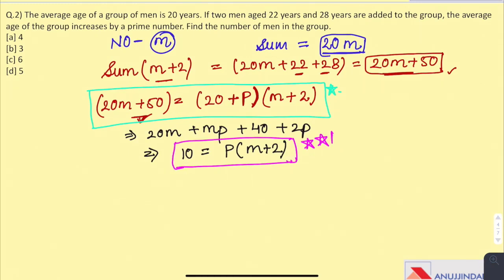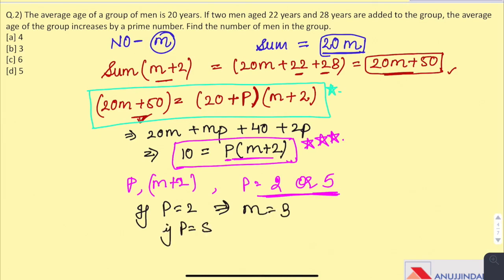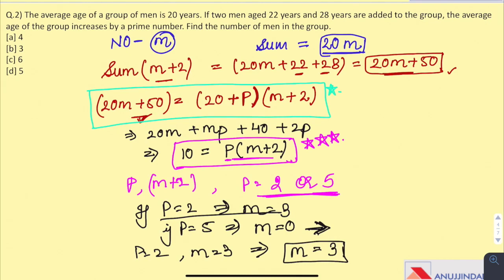This equation is very important for solving the question. As it is given, p multiplied by m plus 2 equals 10, then p and m plus 2 must both be factors of 10. And as p is a prime number, it can only be 2 or 5. Now, we will put both the values and check for the answer. If p equals 2, then we get that m equals 3. And if p equals 5, then m comes out to be 0, which is impossible because the number of members cannot be 0 in the group. So the number of members initially in the group was 3, and after two members have been added, the number of members is 5 in the group. So, the answer is D.